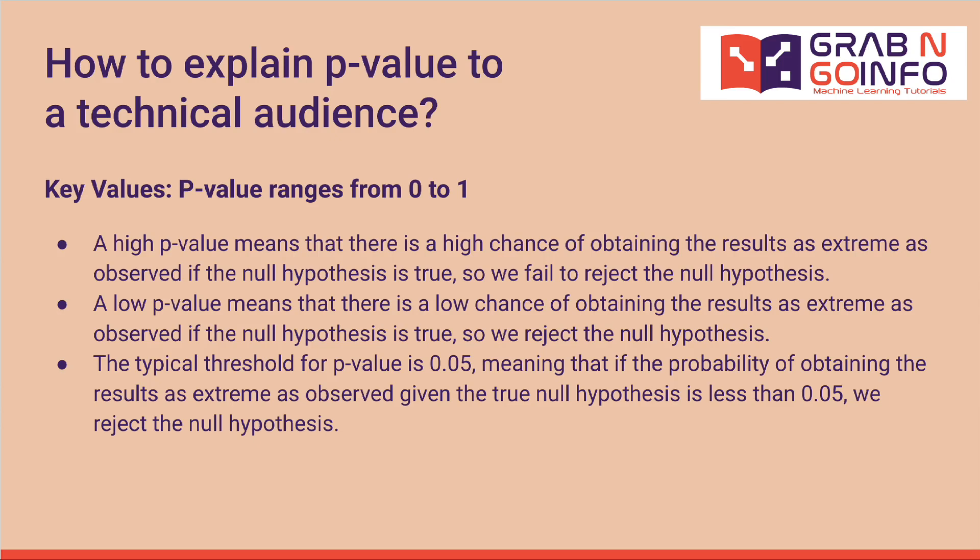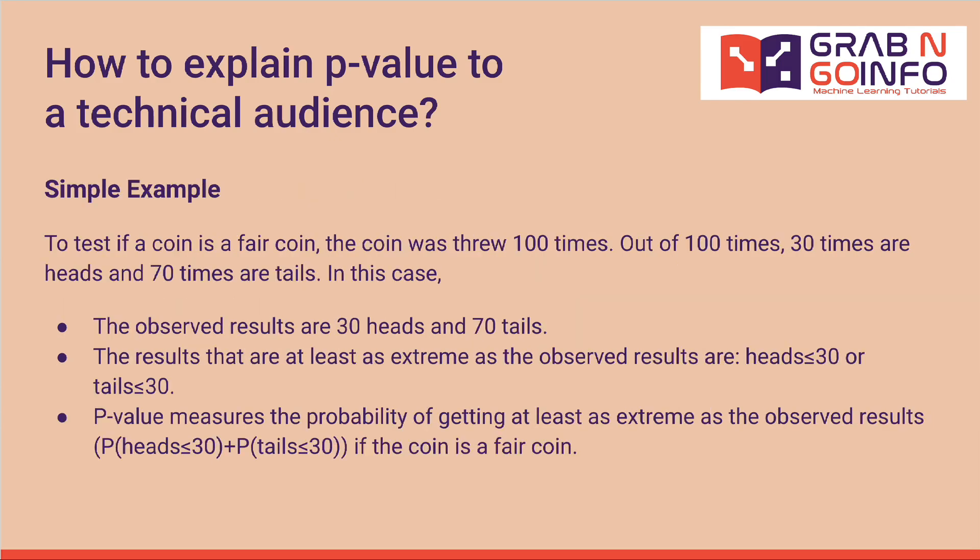Here is a simple example to test if a coin is a fair coin. The coin was thrown 100 times — 30 times were heads and 70 times were tails. The observed results are 30 heads and 70 tails. The results that are at least as extreme as the observed results are heads less than or equal to 30, or tails less than or equal to 30. P-value measures the probability of getting at least as extreme results if the coin is a fair coin.